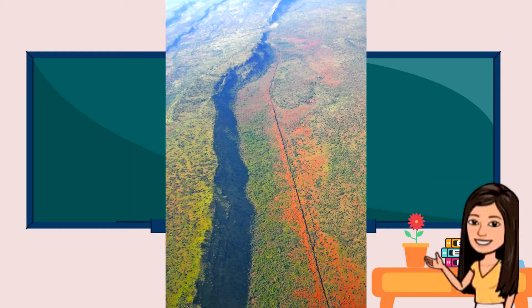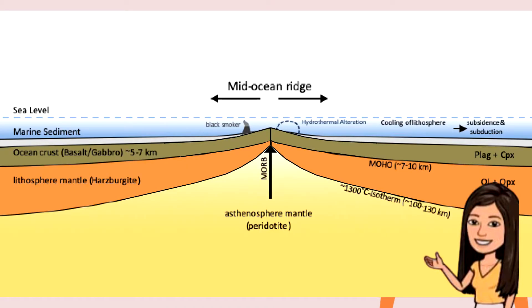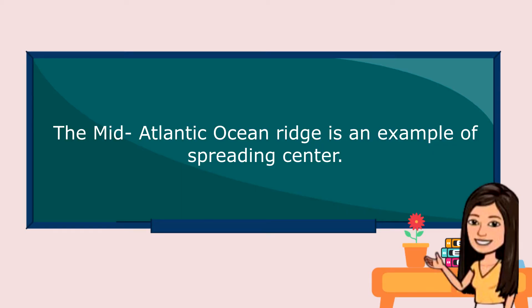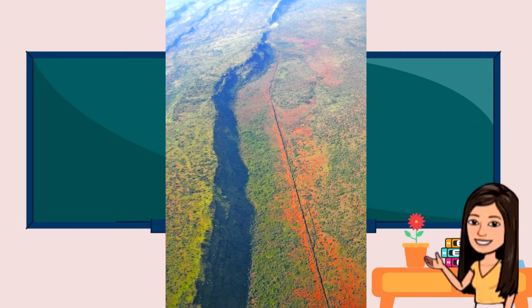In divergence of plates, formation of rift valleys and oceanic ridges will occur due to the spreading and splitting of plates. The mid-Atlantic ocean ridge is an example of a spreading center. When a rift valley increases in length and depth, the valley may develop into a linear sea, just like the Red Sea today.